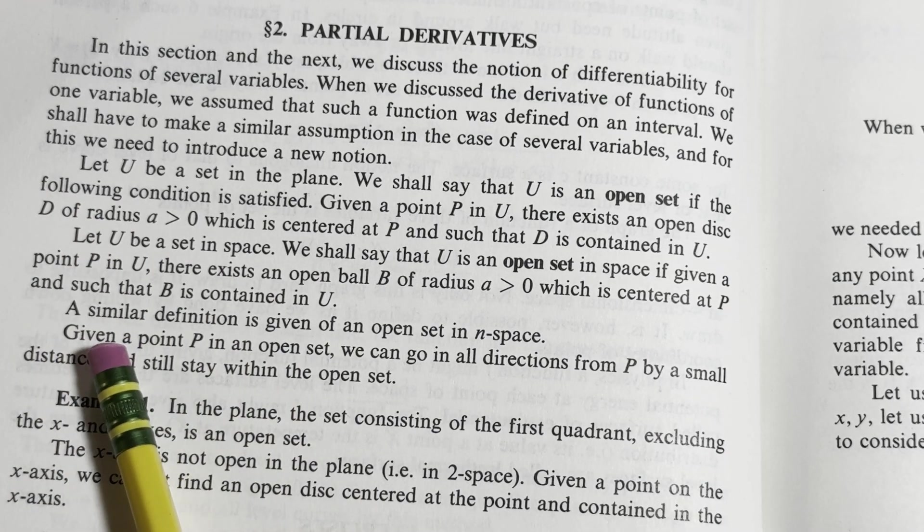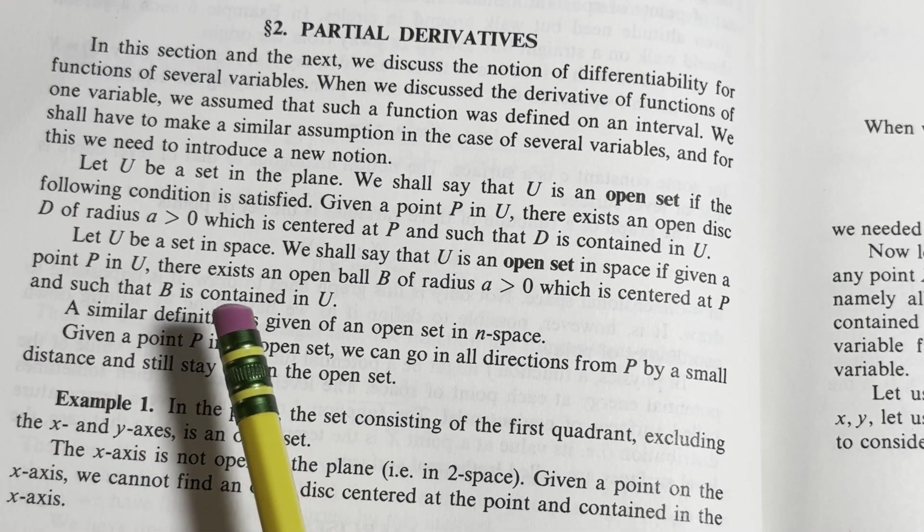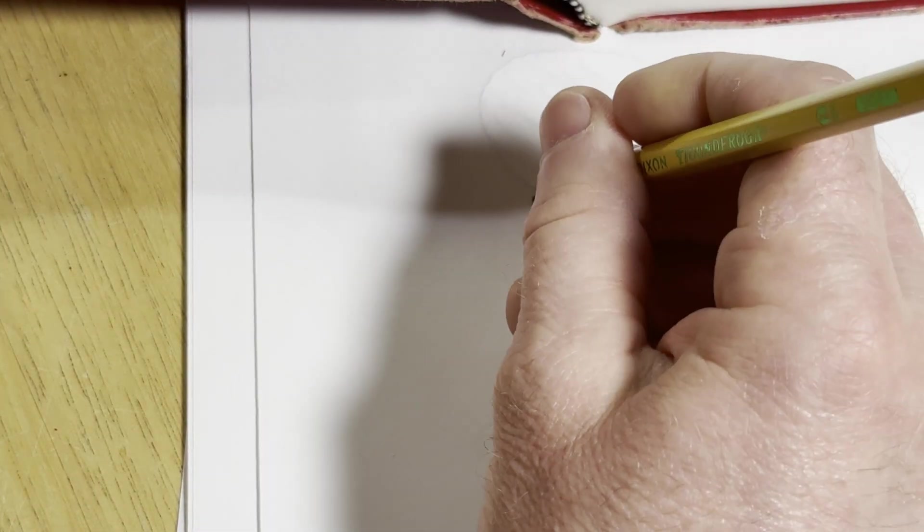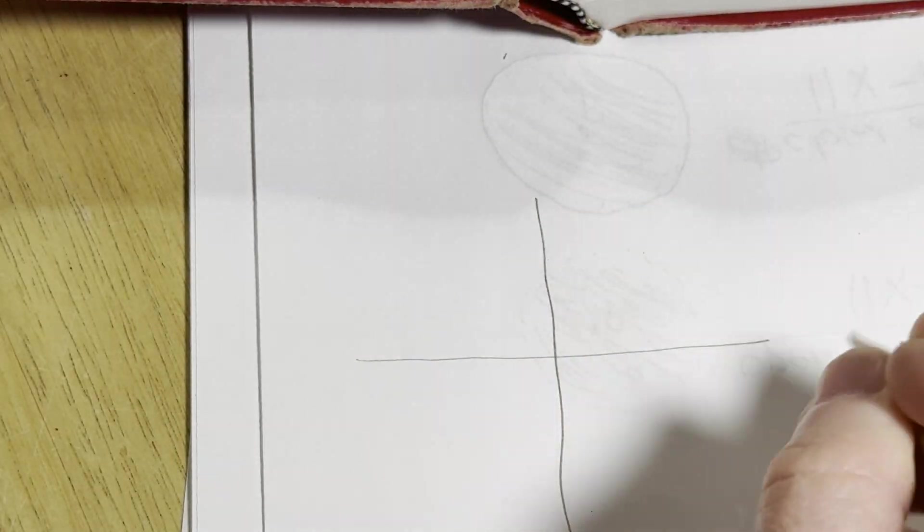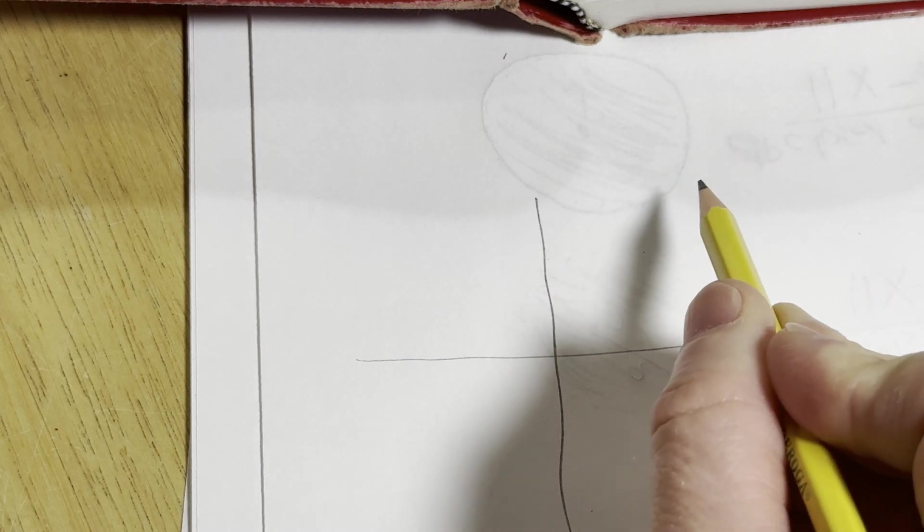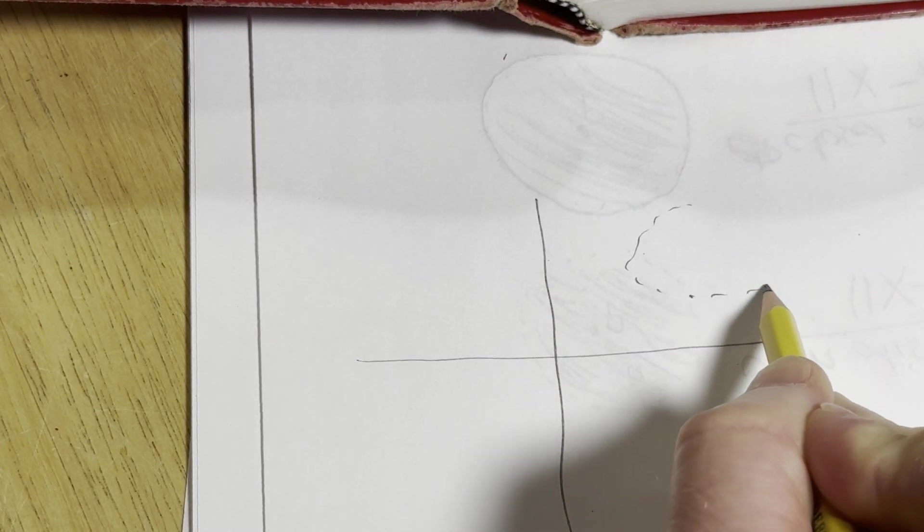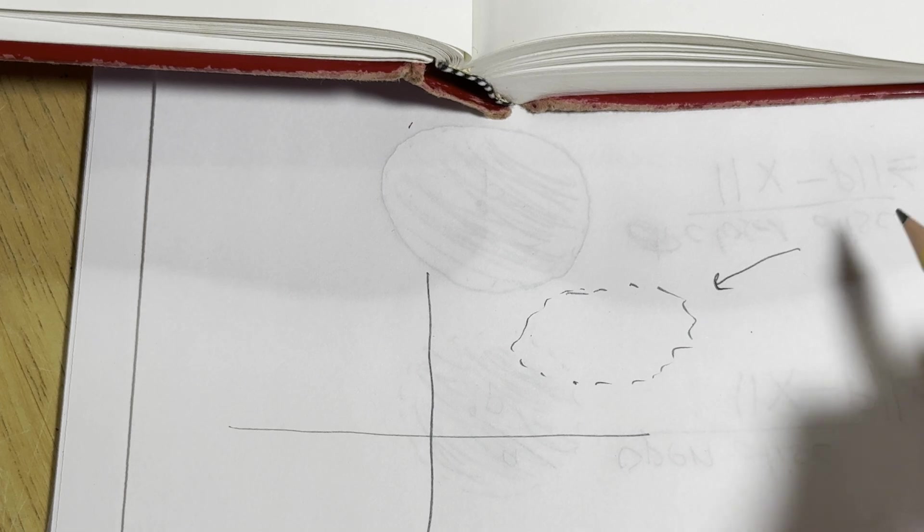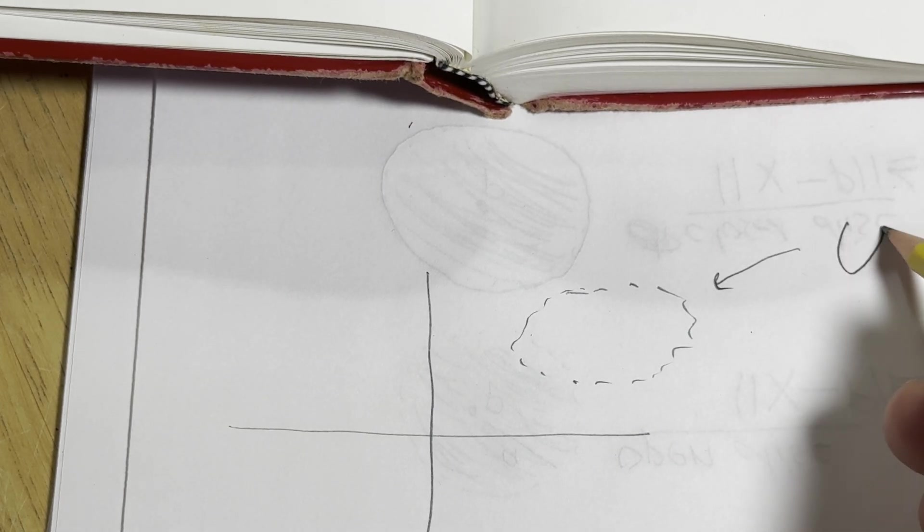So D is the disk. I'll draw a picture in a minute. Well I can do it now, let me just show you. So if this is the plane and U is a set in the plane, let's say this is our set U, it's saying that if you take a point P in U.